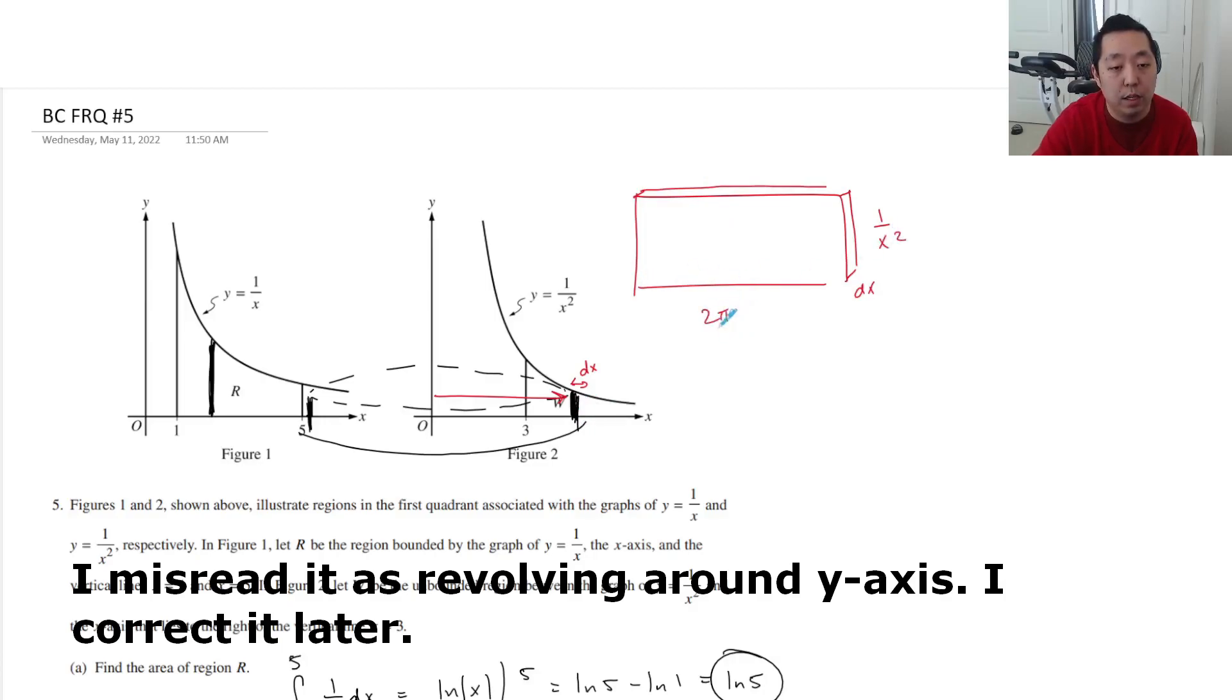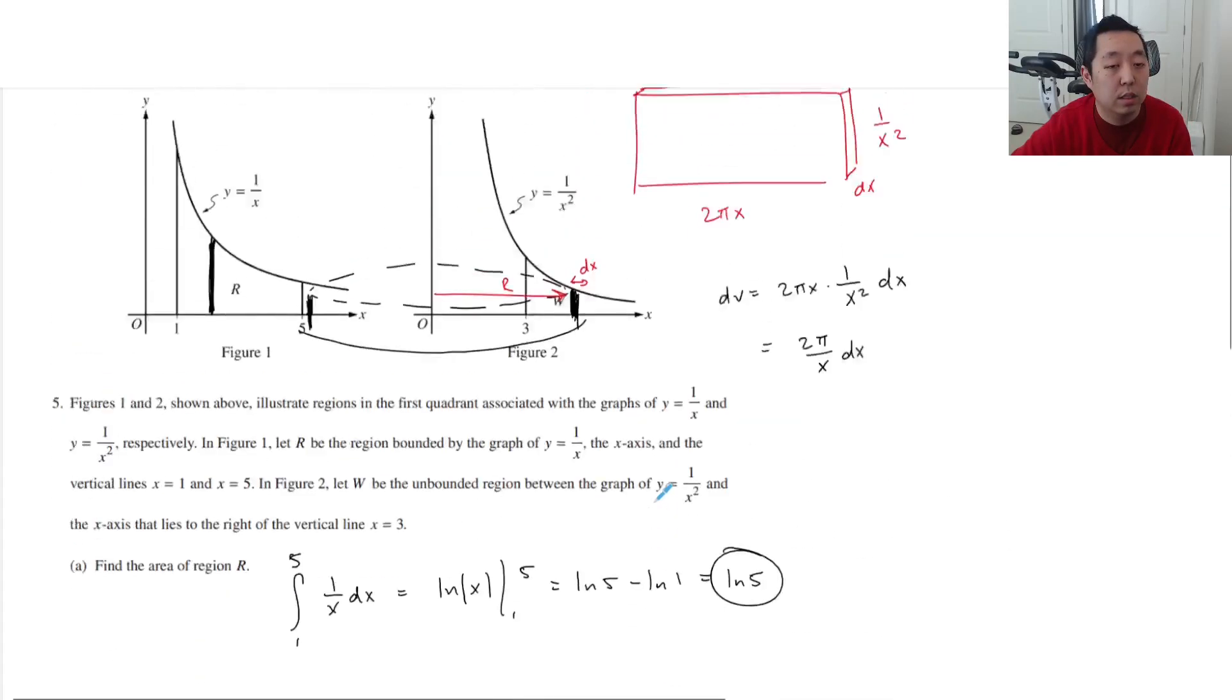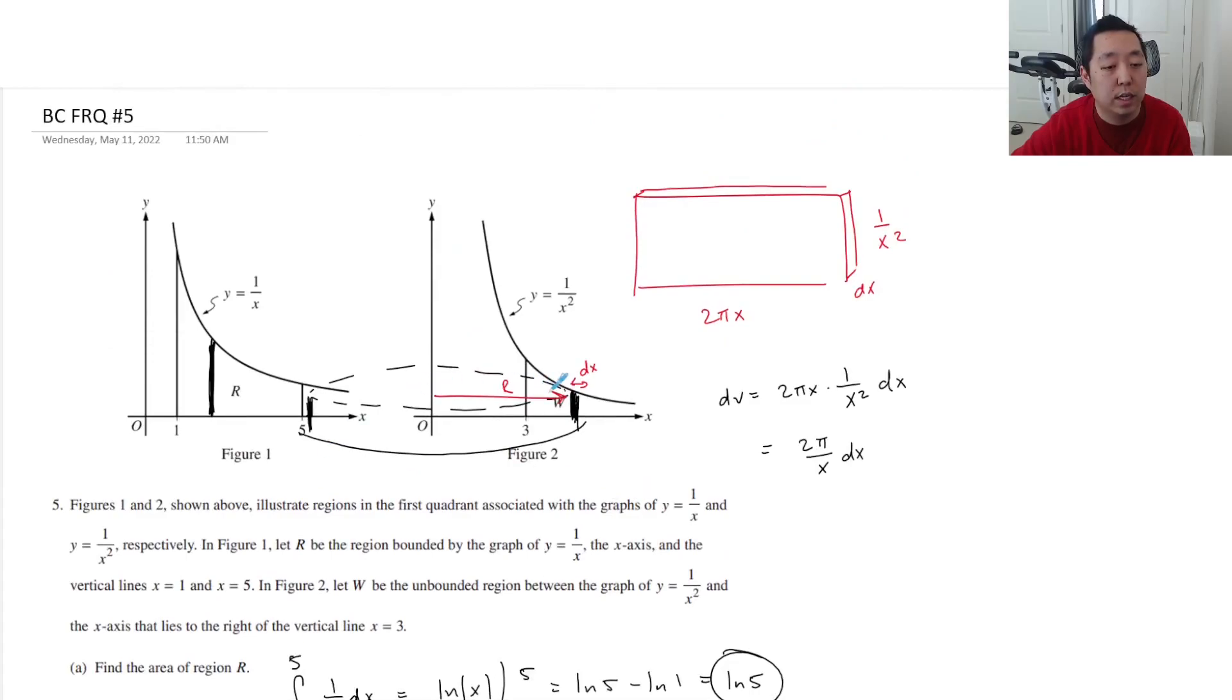If I unravel it, the thickness is dx, the height is 1 over x squared, and this is 2πr because it's like a cylinder where r is just your x value, so 2πx. The volume integral is 2πx times 1 over x squared dx, which is just 2π over x dx. Then I integrate from 3 to infinity. But that's not going to be finite. Let me check if I messed something up. The radius is x, the height is 1 over x squared, integrated from 3 to infinity. This is going to be ln, so this is not a bounded integral.